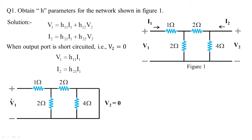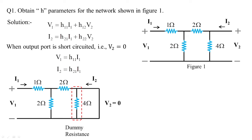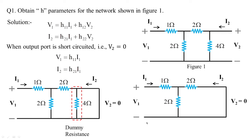With v2 = 0, source input voltage is v1, current i1 is flowing, and the output is shorted. The current i2 flows in this circuit as usual. Since v2 = 0, the same voltage applies to the 4-ohm resistor, making it dummy in nature. Hence the circuit changes from Figure 1 to Figure 1a.